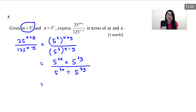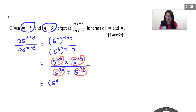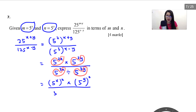So how are we going to use what they give us — m and n — to express the answer? You can see there's a 5^x and a 5^y on the top, and 5^x and 5^y on the bottom. I'm going to rewrite this: take 5^x and bring the 2 as the outer power, times 5^y with 2 as the outer power, over 5^x to the power of 3, divided by 5^y to the power of 3.